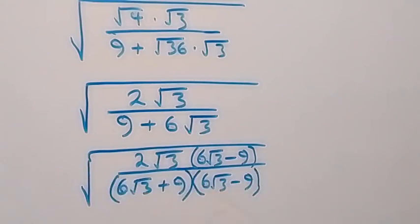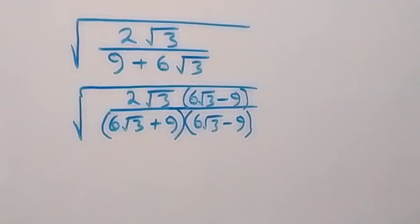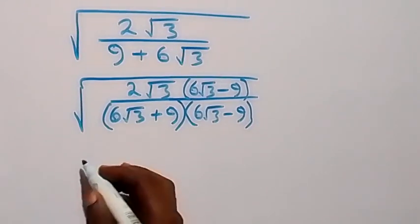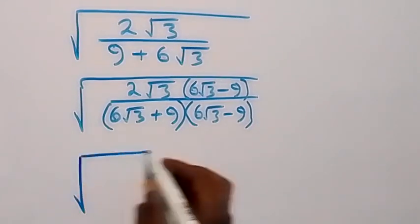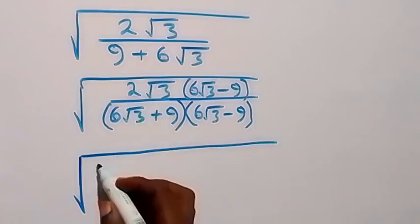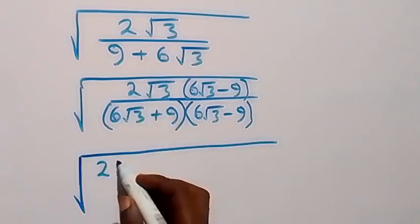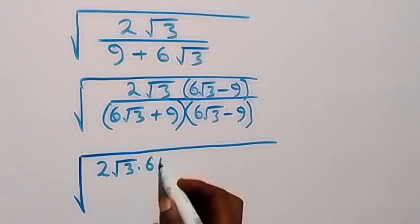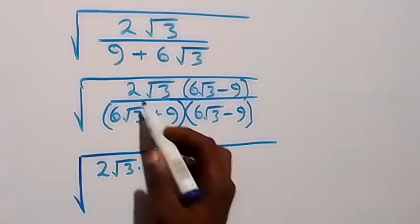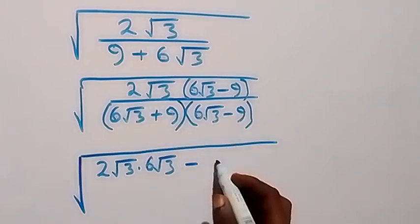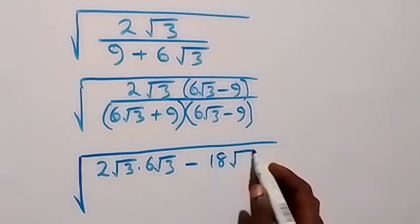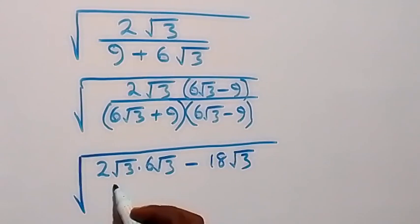From here, we have rationalized. The next step: we multiply, and this becomes square root of — here we have 2 root 3 times 6 root 3, then minus 2 root 3 times 9, which will become 18 root 3. And from here we divide by the denominator.